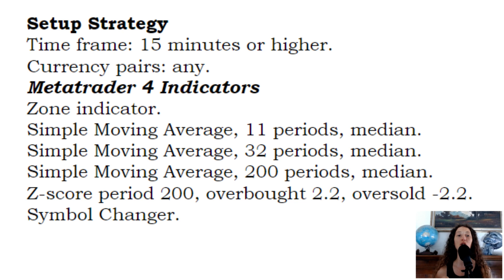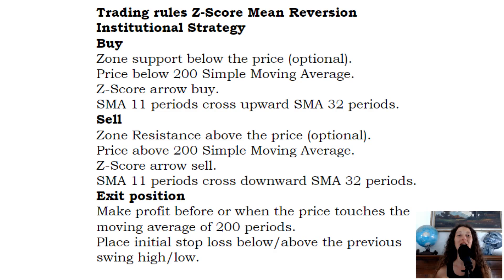Trading rules — Buy: Zone support below the price (optional). Price below the 200 Simple Moving Average. Z-score arrow buy signal. SMA 11 periods crosses upward the SMA 32 periods.